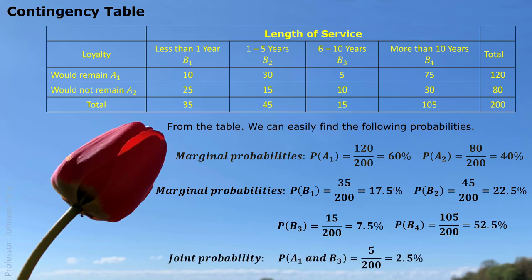We can also get joint probability. For example, probability A1 and B3 means: randomly pick a person — how much chance did this person answer yes (staying in the company) and also worked for the company for 6 to 10 years? That is A1 and B3. We directly take the joint frequency 5 divided by the table total to get the percentage — that is the probability.